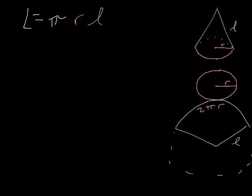I also know that the fraction this sector is of this whole circle is going to be equal to the fraction that this arc length is to the whole thing. So what is that fraction? Well, 2πr is to the circumference of this whole thing, which would be 2πl. And my lateral area that I'm interested in finding is to the area of the whole thing.